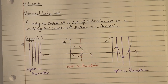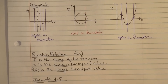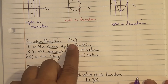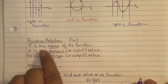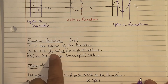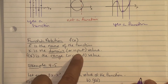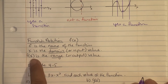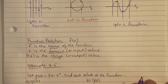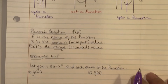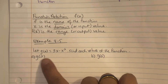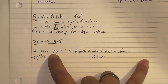Function notation is written as f(x). Here, f is the name of the function, x is the domain or input value, and f(x) is the range or output value. For examples 4 and 5, let g(x) equal three x minus x squared.